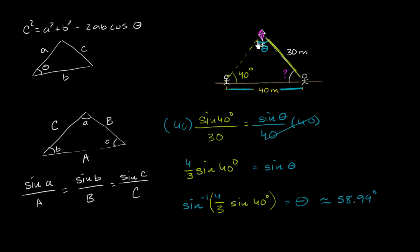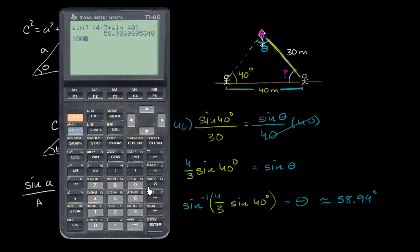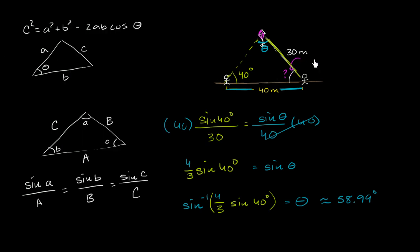So if that is 58.99 degrees, what is this one? Well, it's going to be 180 minus this angle's measure minus that angle's measure. So let's calculate that. So it's going to be 180 degrees minus this angle, so minus 40, minus the angle we just figured out. And actually, I could get all of our precision by just typing in second answer, so that I get all that precision there. And so I get 81.01 degrees. So if I round to the nearest hundredth of a degree, then I'd say 81.01 degrees. So this right over here is approximately 81.01 degrees.